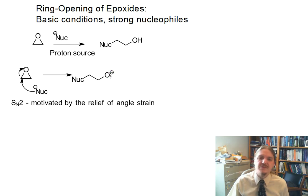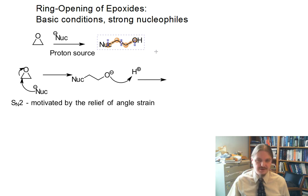And then one arrow, there we go. In a subsequent step, it can react with a proton source, pick up a proton, and generate neutral product.